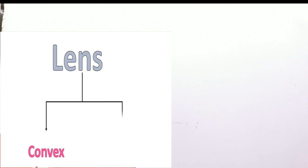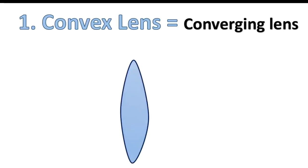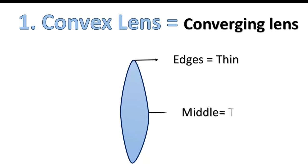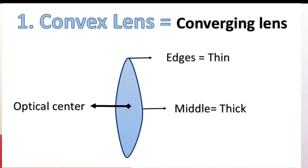Depending on their action, lenses are classified as two types: convex lens or converging lens, and concave lens or diverging lens. A convex lens is thick in the middle and thin in the periphery — in other words, a convex lens has its middle portion bulged. A convex lens converges the rays of light falling on it. Depending on the shape, convex lenses are of three types.